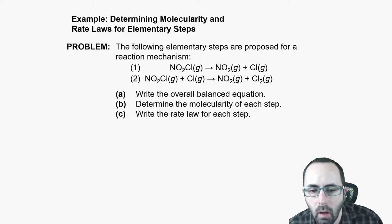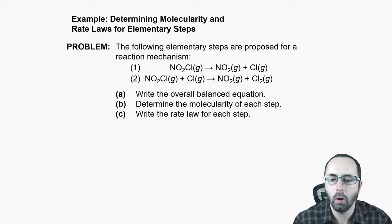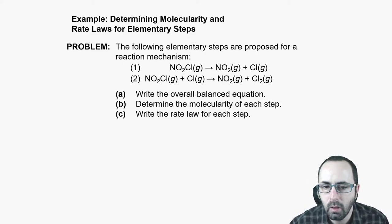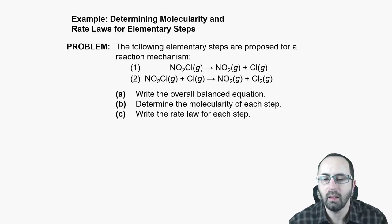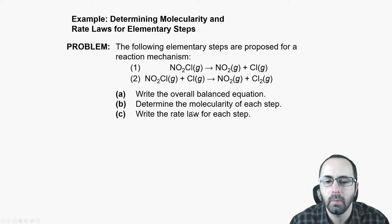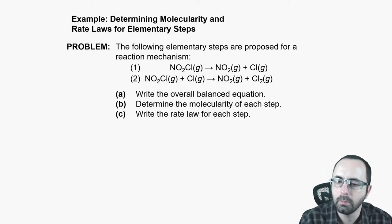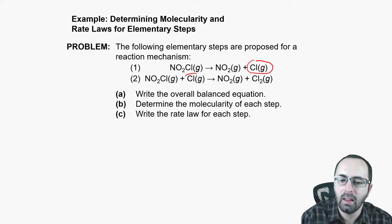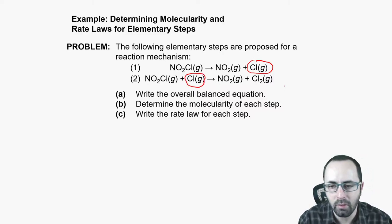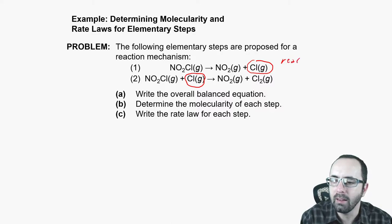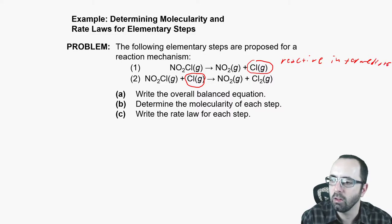Let's say we have the following elementary steps proposed for a reaction mechanism. The first step is that NO₂Cl makes NO₂ and a Cl atom, and then the NOCl reacts with the Cl to make NO₂ and Cl. You can see that chlorine is produced in the first reaction and then immediately consumed — this happens very regularly. Chlorine here is a reactive intermediate. It's very reactive, it doesn't stick around for very long.